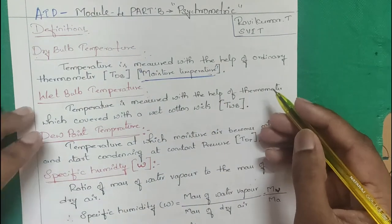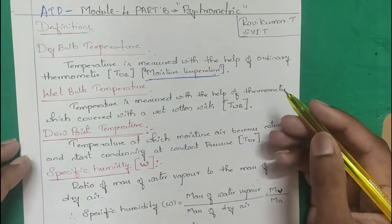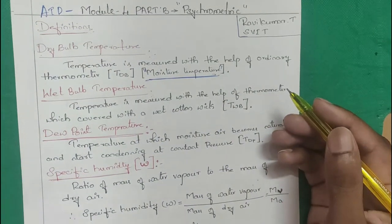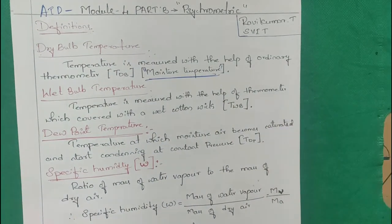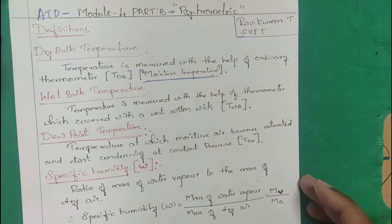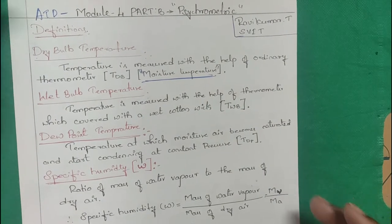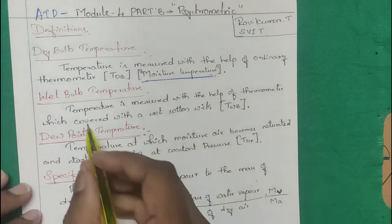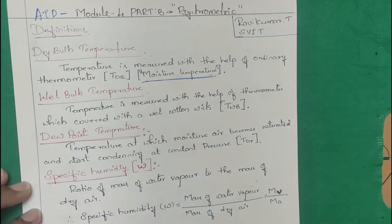Next is wet bulb temperature. Wet bulb temperature is measured with the help of a thermometer, but the tip of the thermometer has a wet wick or cotton wick attached. That is called the wet bulb temperature, abbreviated TWB.